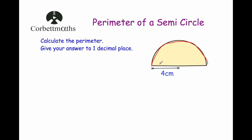So what we're going to do is focus on this arc to begin with. We want to find the distance from here round to here. We're going to use the circumference of the circle — we'll work out the circumference of the whole circle. We've got the radius as 4cm, so that means the diameter of the whole circle would be 8cm — the whole way across would be 8cm.